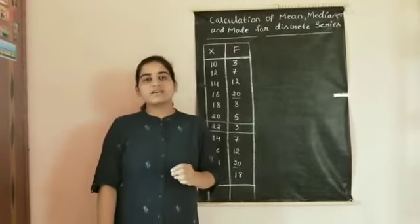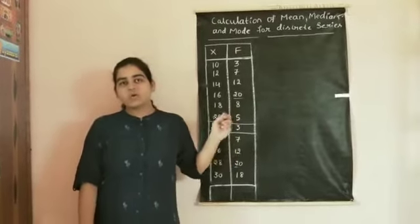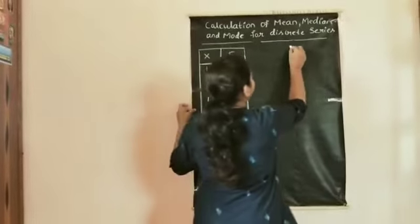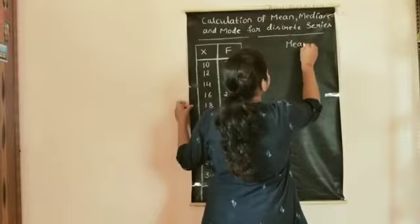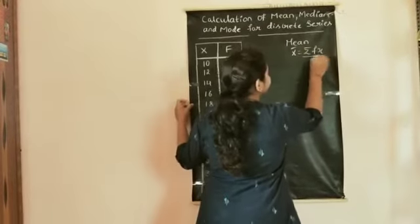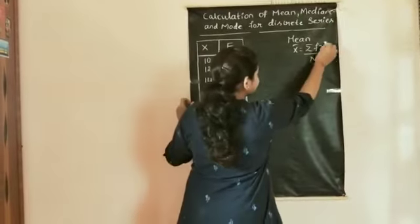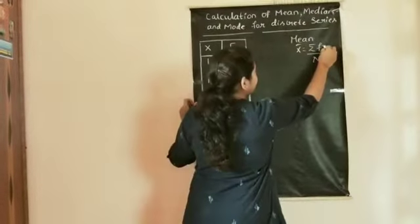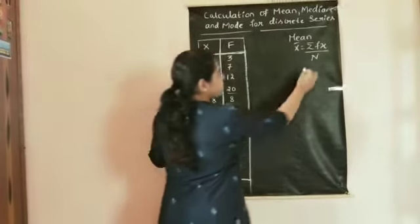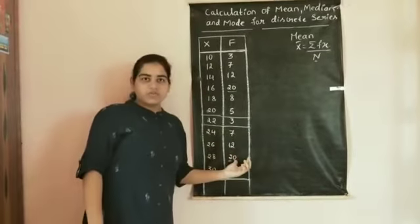Good morning students. Today we are discussing the calculation of mean, median, and mode for the given discrete series. To find the mean, we use the formula: mean is equal to summation of fx divided by n, where summation of fx is the total of all fx values, and n is the total number of observations.